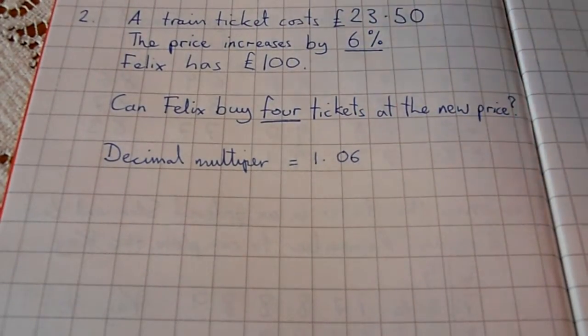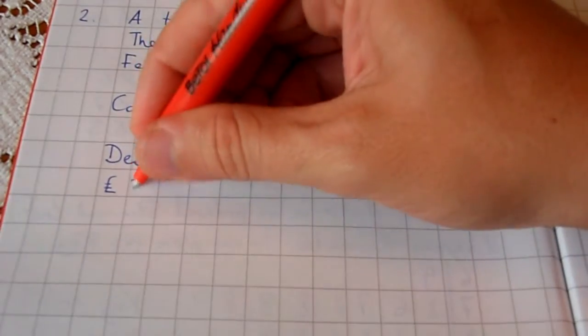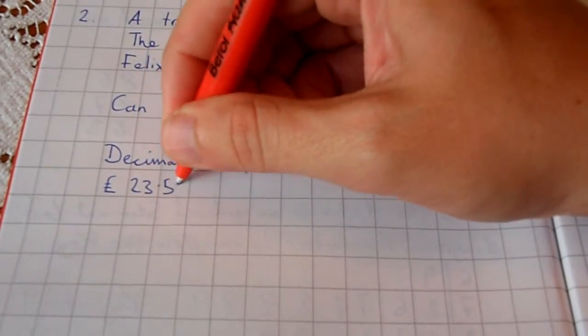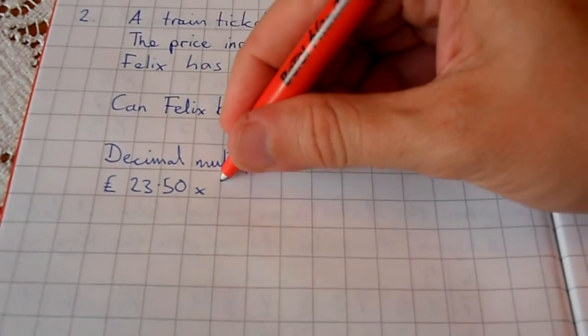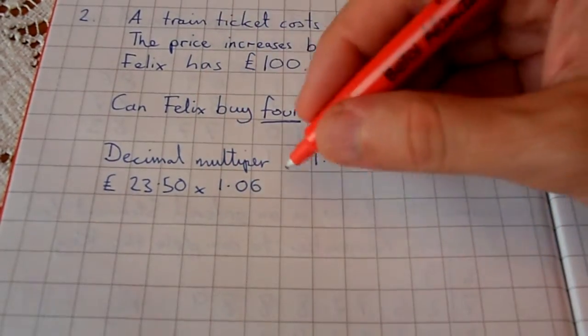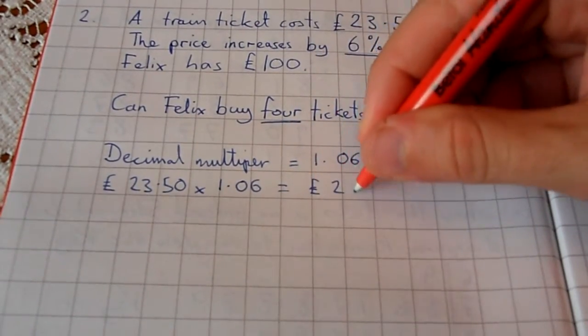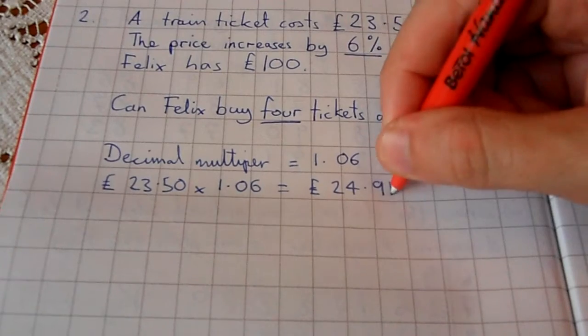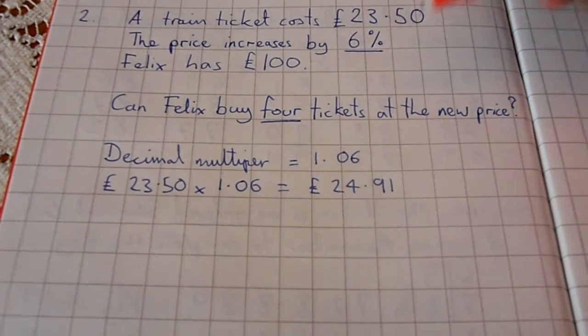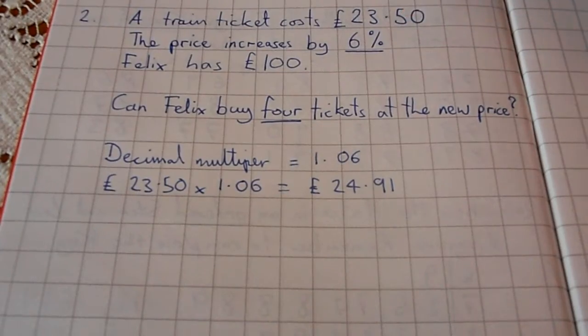We take the original price of £23.50 and multiply it by the decimal multiplier 1.06. That gives us the cost of the new ticket, which is £24.91. So we've established what one ticket costs after the 6% increase.